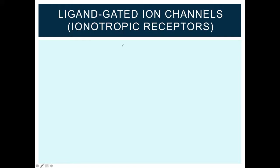So the first type of receptor I want to focus on are the ligand-gated ion channels. Ligand-gated ion channels are generally composed of more than one subunit, and these channels can open or close in response to the binding of a ligand.